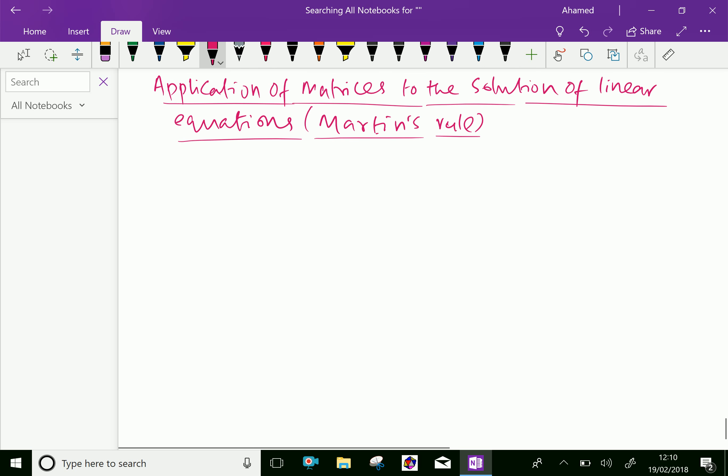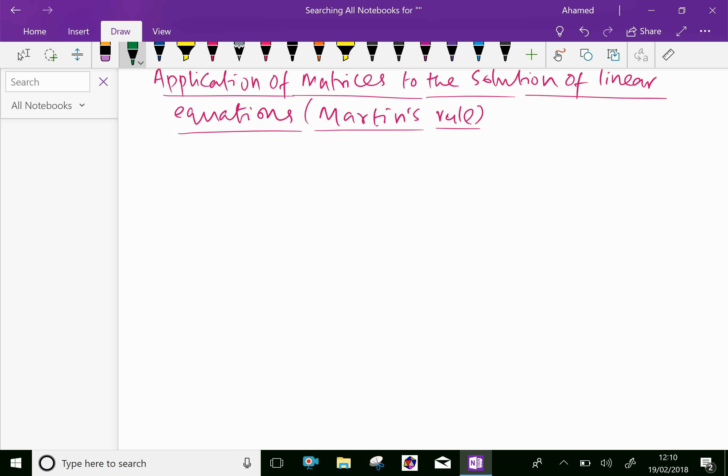Here consider two simultaneous equations in two variables. Consider the simultaneous equations in two variables: a1x plus b1y equals c1, and a2x plus b2y equals c2.